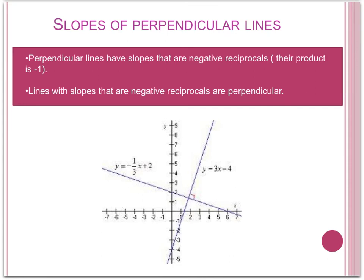Now, we can also look at the slopes of lines to show whether two lines are perpendicular. Perpendicular lines have slopes that are negative reciprocals. This means that their product is equal to negative 1. Lines with slopes that are negative reciprocals are also perpendicular.